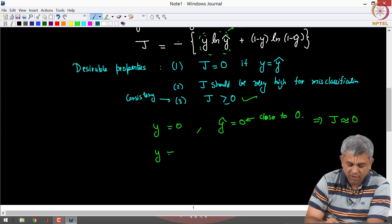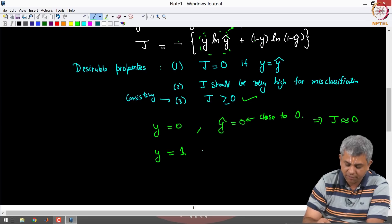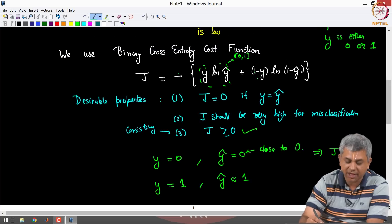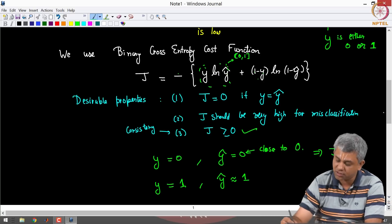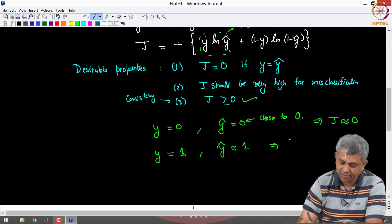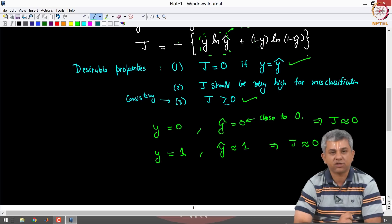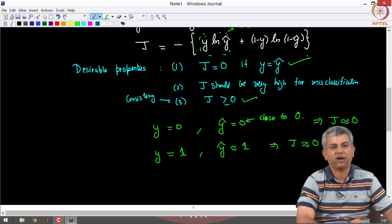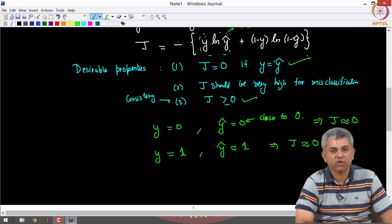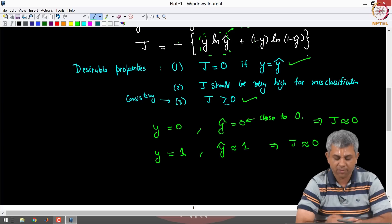Similarly, you can check if Y is 1 and Y hat is close to 1. Then this term is exactly 0 and this term is going to be 1 multiplied by ln of approximately 1, so this is also going to be approximately 0. So this condition is also satisfied. That is if you classify correctly, your cost function is going to be approximately 0.